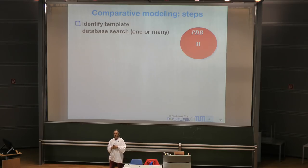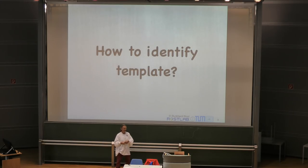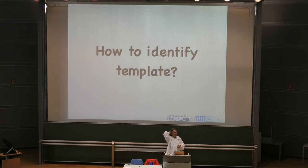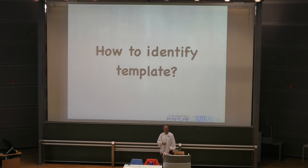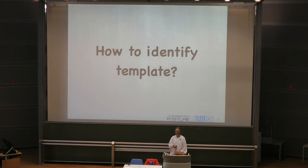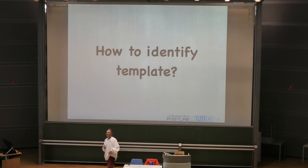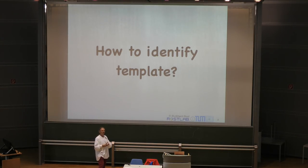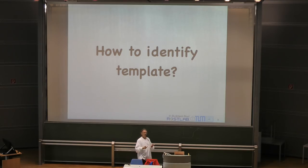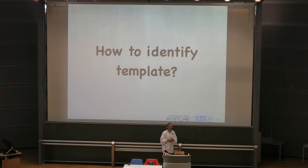How can I find H? The answer is simple — you know all of this already. I have a query protein Q, and I suspect there is a similar protein in the PDB. The question is: what method do I apply to find out whether my suspicion is right?